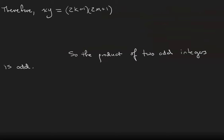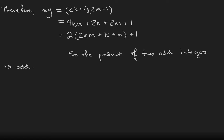Continuing with the forward direction: x times y equals (2k + 1)(2m + 1). Applying the distributive property, that's 4km + 2k + 2m + 1. The goal is to prove this is odd, so I rewrite it as 2(2km + k + m) + 1, which is odd by definition. So the product of two odd integers is odd.